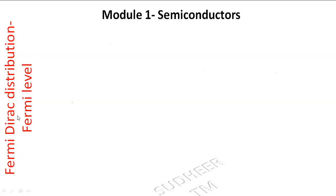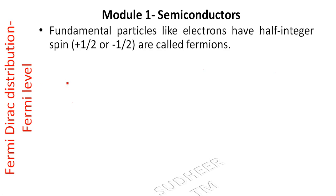This lecture is about Fermions and the Fermi-Dirac distribution — the distribution of charge carriers within energy levels. Fundamental particles like electrons that have half-integer spin are called Fermions. The spin quantum number can be plus one-half, minus one-half, or integer multiples of one-half such as plus three-halves, plus five-halves. Particles with these same spin quantum numbers are called Fermions.